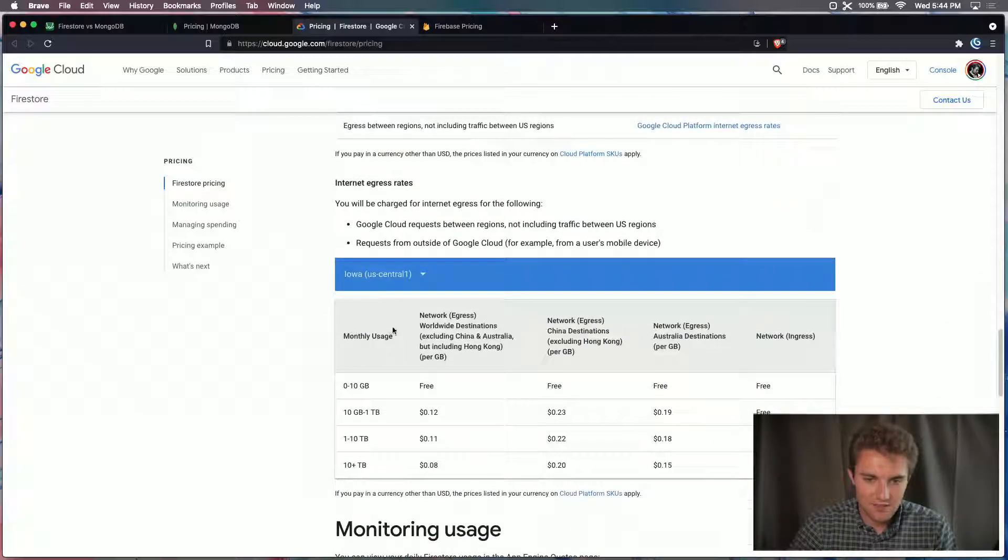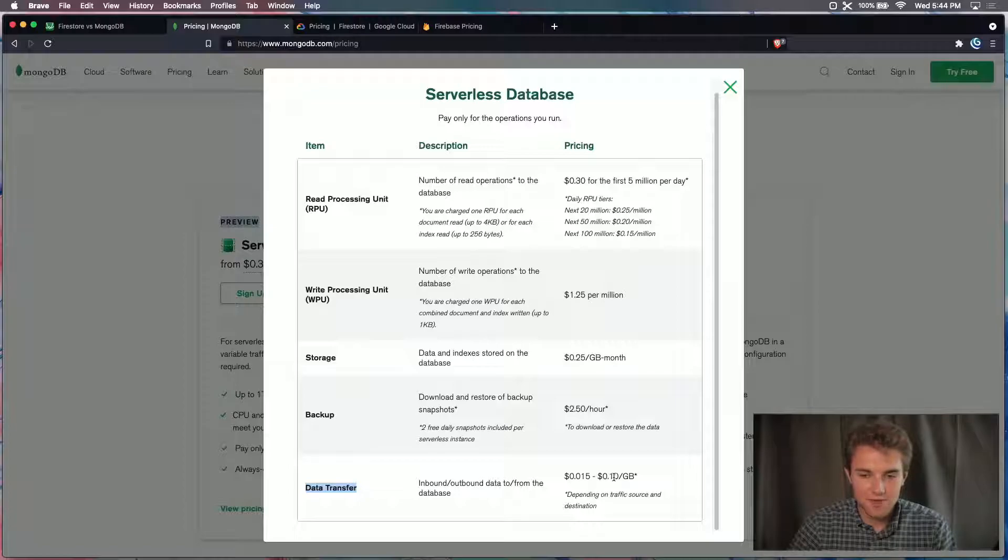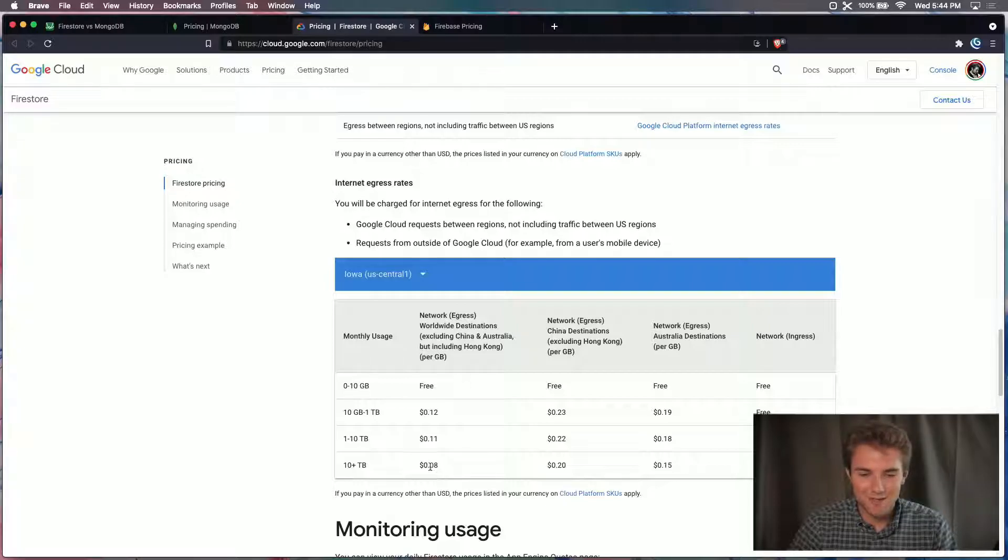You'll notice, okay, so egress. Okay, so Firestore does not charge for ingress, only egress. And the cheapest it gets to is $0.08 per gigabyte. And the most expensive MongoDB gets to is $0.10 per gigabyte. So generally speaking, in data transfer, MongoDB is going to win. Except for if you get over 10 terabytes for Firestore, then maybe justify using that. Again, unless you have a lot of writes and not that many reads, because then your ingress will be writes, and that is not charged for Cloud Firestore.